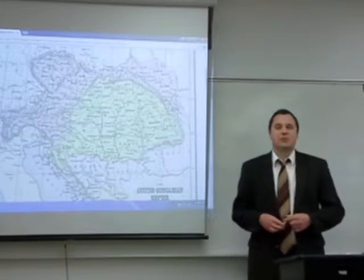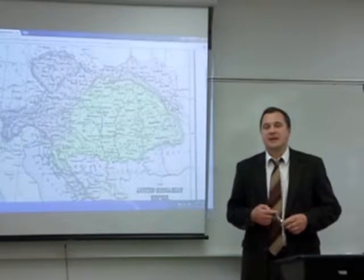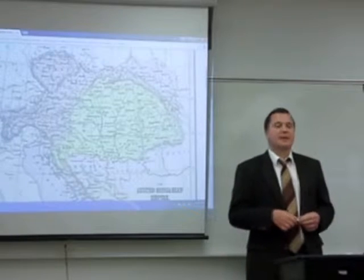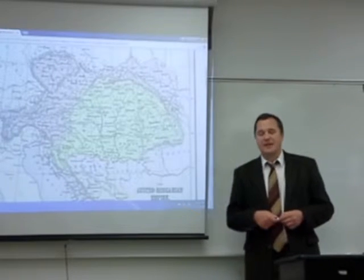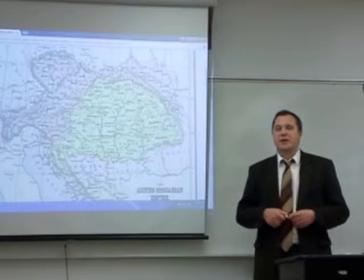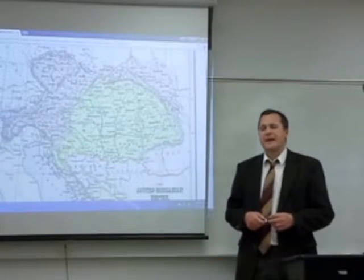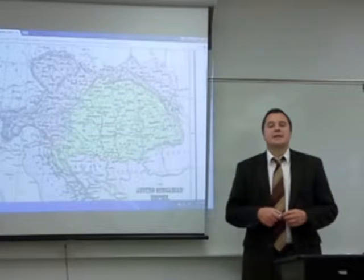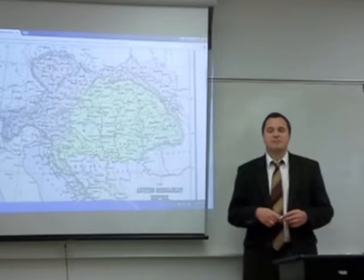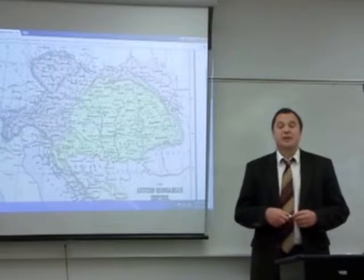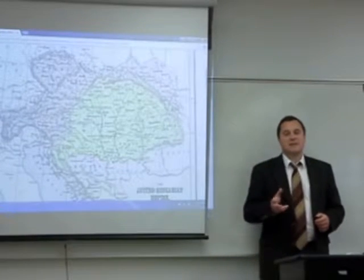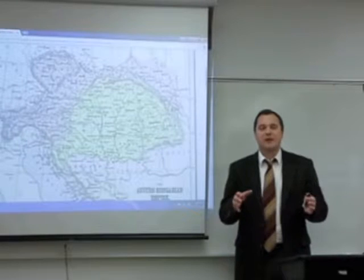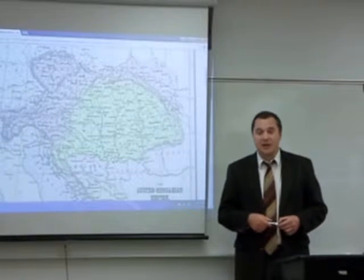Today's lecture will attempt to make some connections between the various materials that you have on the Austro-Hungarian empire, especially since the textbooks themselves do not cover it specifically. This is why you have other materials posted — readings, maps, and so on — to accumulate the information that the textbooks would normally give you. In this lecture, I am going to try to point out a few elements that are worth underlining, that you should pay attention to, and that should help you understand the information collected from these sources.